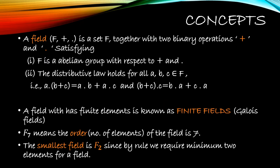Now let's move on to the concepts. You should understand what a field is first. F with plus and dot — there are two binary operations, addition and multiplication. It is a set F together with two binary operations plus and multiplication satisfying two conditions. The first is F is an abelian group with respect to plus and dot. An abelian group is a group satisfying four properties, and if the commutative property is also included then I can call it an abelian group. It should be an abelian group for both plus and dot.